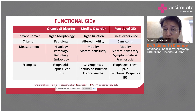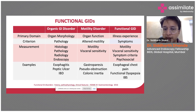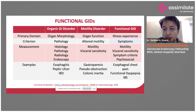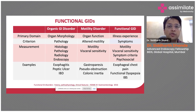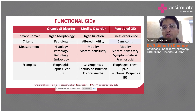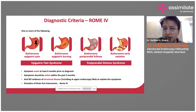If you look at a motility disorder, the primary domain of involvement would be organ function, which results in altered motility, and the diagnosis would be made by motility studies such as manometry, for example in achalasia cardia. Whereas in functional GI disorders, there is a diagnostic criteria — the primary domain is the illness experienced by the patient — and you won't find any abnormal lab, radiological, or endoscopic pathology. These are usually diagnosed by excluding all organic and motility disorders. The diagnostic criteria is well established and accepted throughout the world.